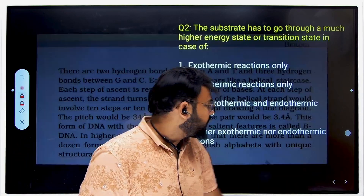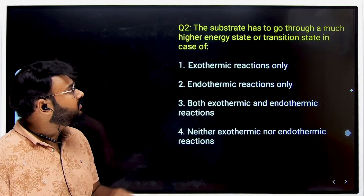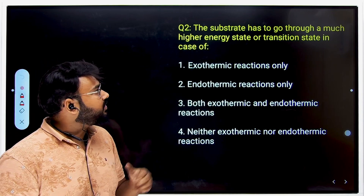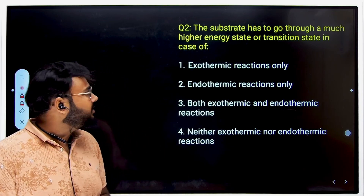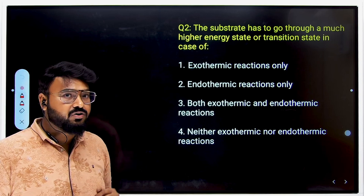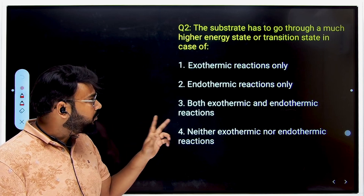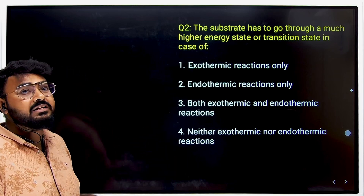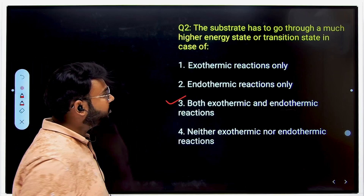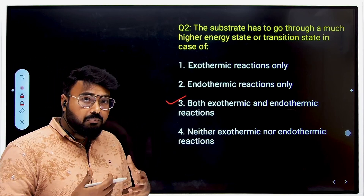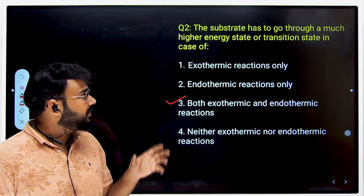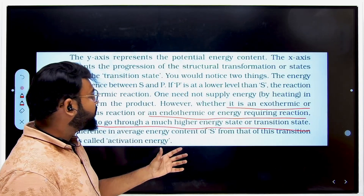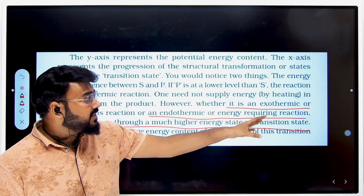The next question: the substrate has to go through a much higher energy state, or transition state, in case of — first, exothermic reactions only; second, endothermic only; third, both exo and endo; or fourth, neither. The correct answer is the third option, because the substrate must go through a transition state in both exothermic and endothermic reactions.